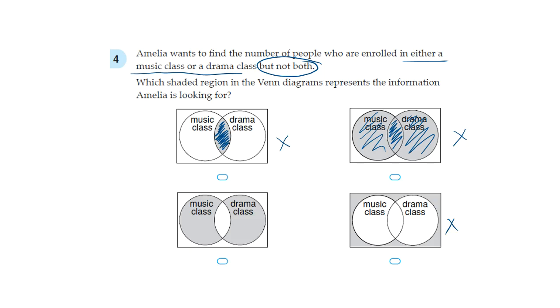But here, this one is correct. Because this shaded part represents those who do music only and this represents those who do drama only. But the people who do both music and drama are not represented because that section in the middle is not shaded. So our answer is this one.